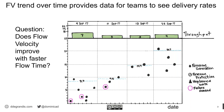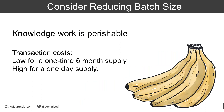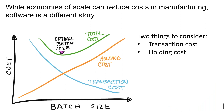Here's why breaking work into smaller bits may not be a problem. If you buy a six-month supply of bananas, your transaction cost is low but most of the bananas will be rotten in a week. If you buy a one-day supply, your bananas won't rot but transaction costs are high because you go to the grocery store every day. Somewhere in the middle is the right batch size.